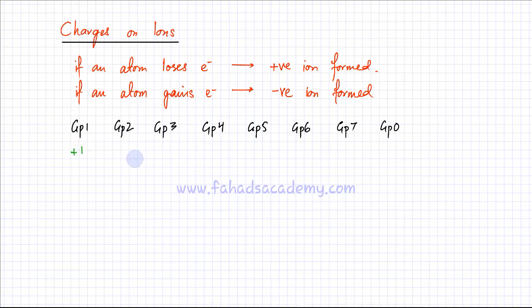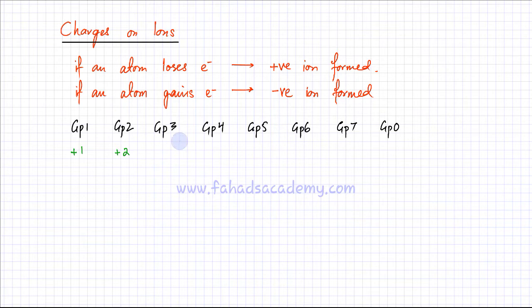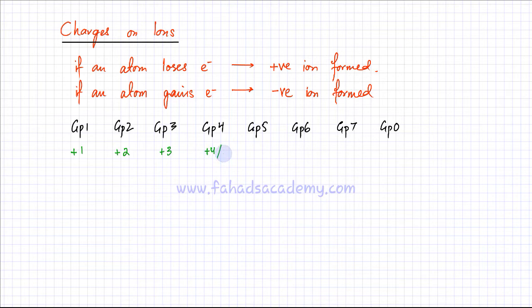Similarly, group two elements, when they form ions, will form an ion of plus two charge because they're always losing two electrons — they have two outer shell electrons and they lose those two. In a similar way, group three are metals and they also lose electrons, having a net positive charge of plus three when they form ions because they have three outer shell electrons. Group four could be plus four or minus four, but generally they're not involved in ion formation that much.